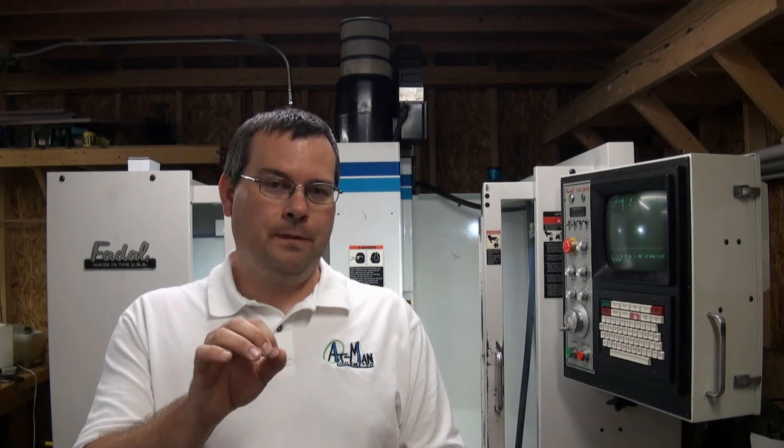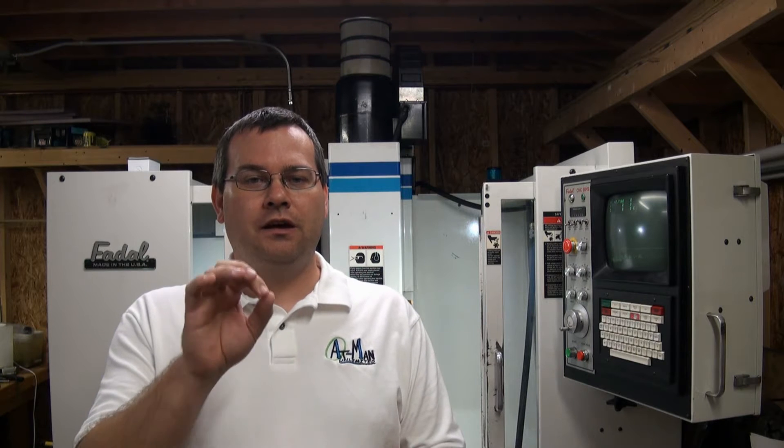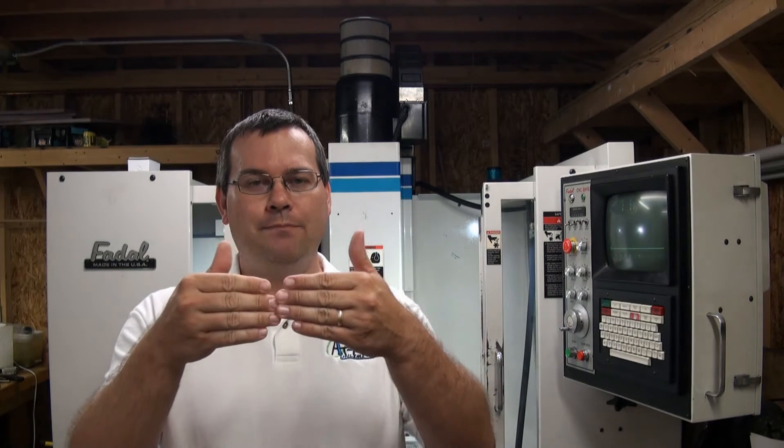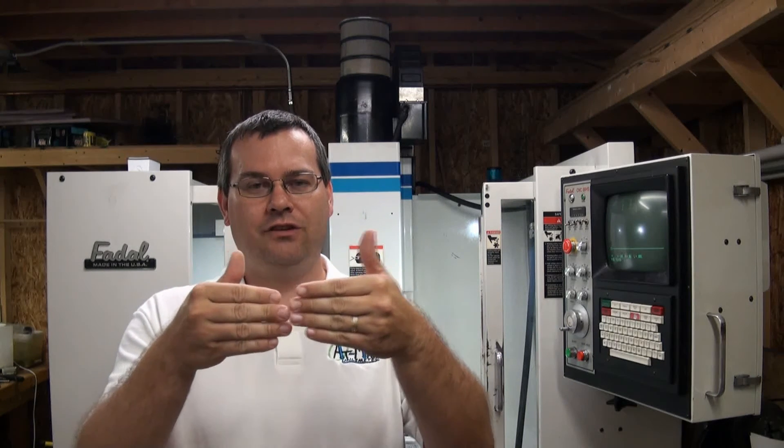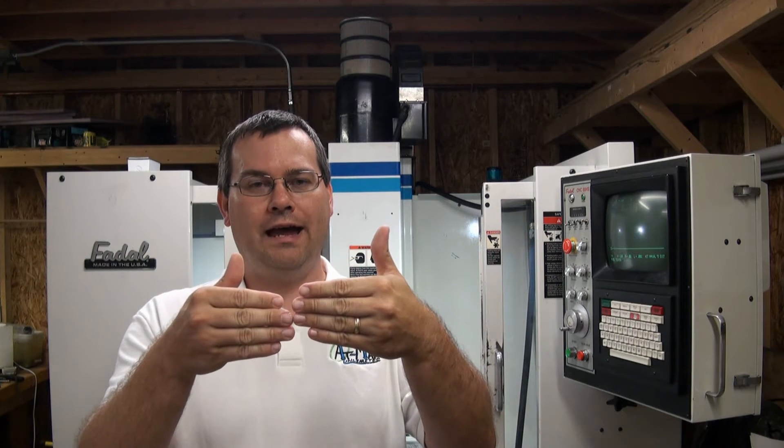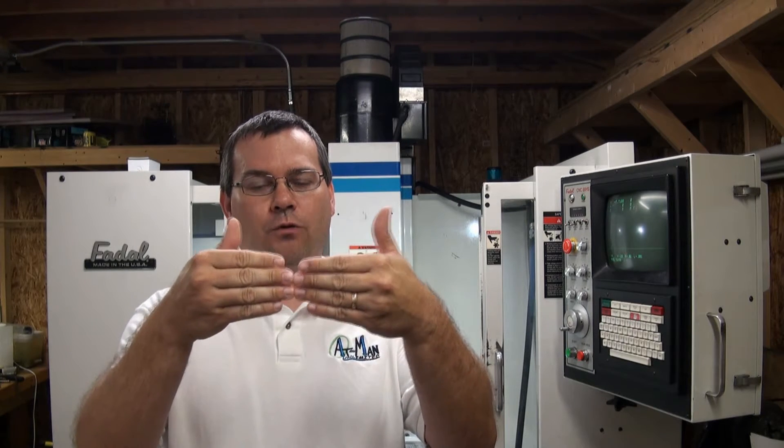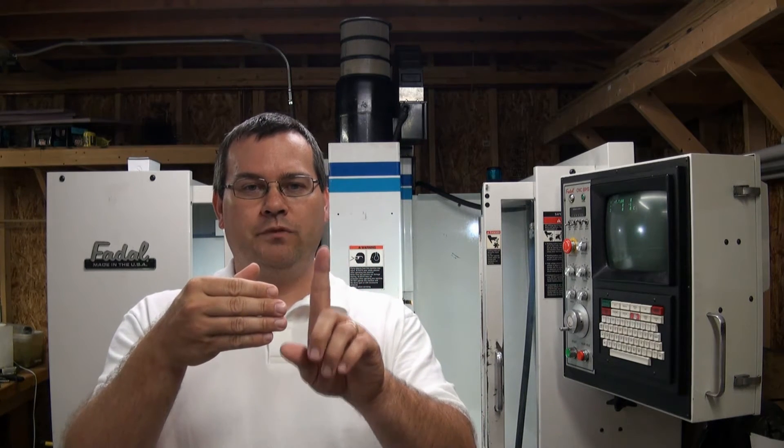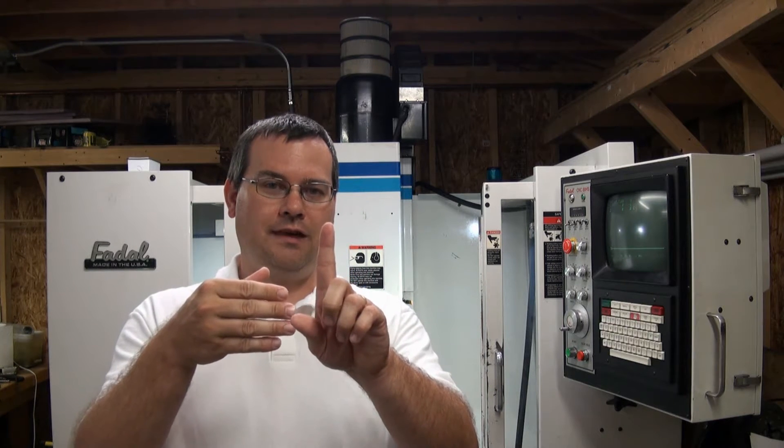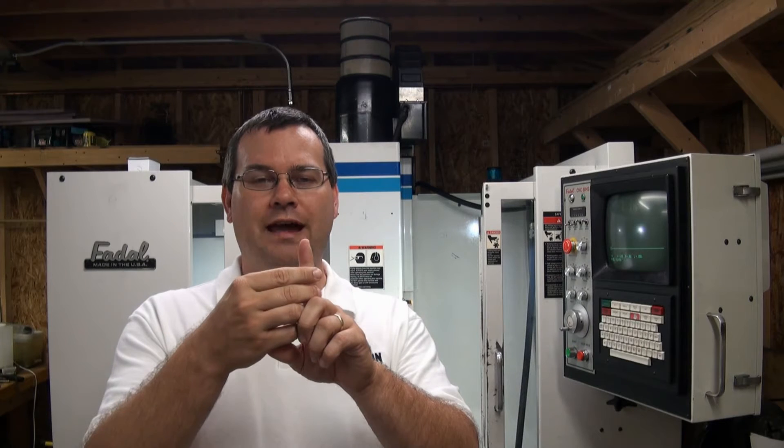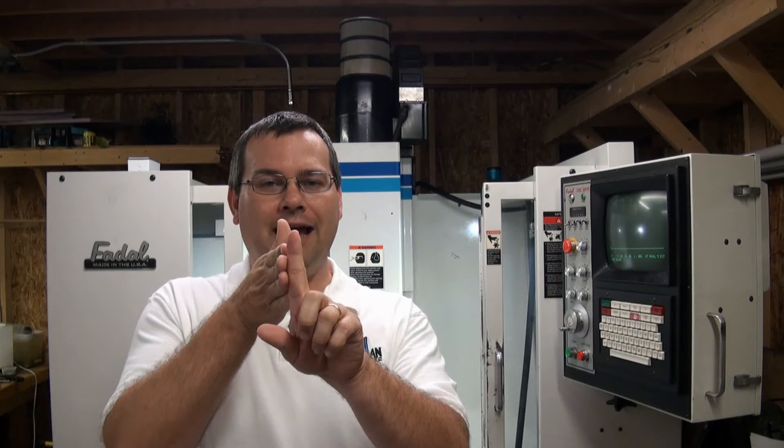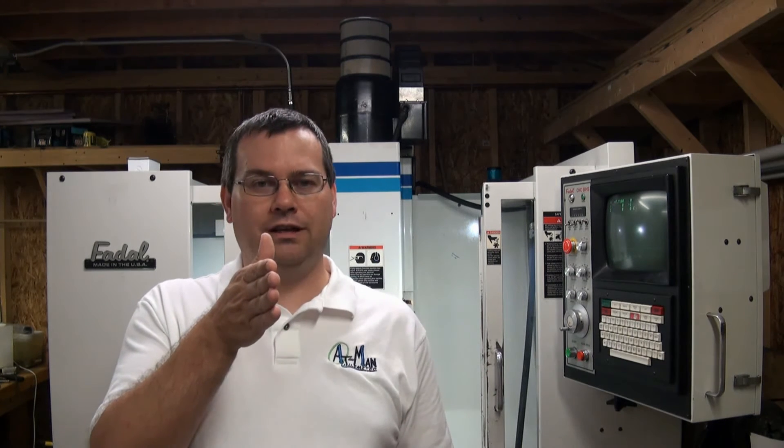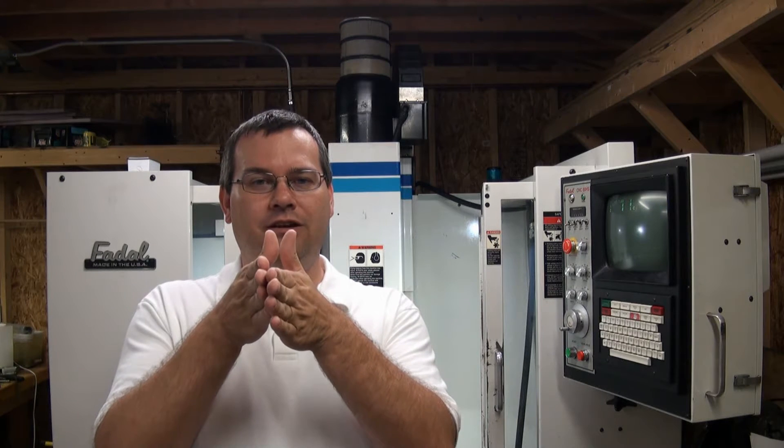So what we're going to do is we're going to first put a test indicator in the machine and we'll find the y portion of the spindle axis so we'll zero the spindle axis in y so that it's parallel with our test indicator. Then we will put in a ground end mill that we've miked the diameter on so we have a known diameter and we'll bring that up in x and then we'll zero off of it.